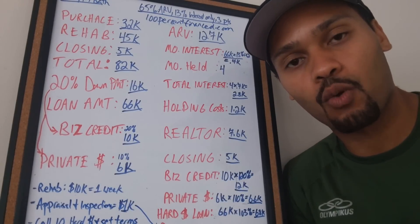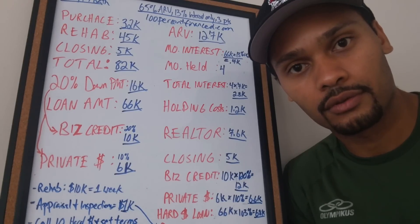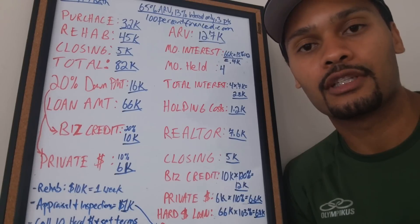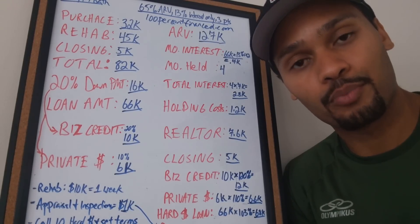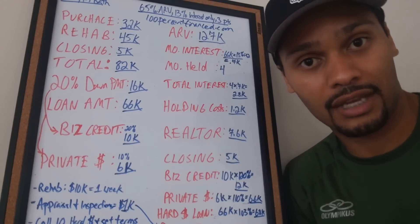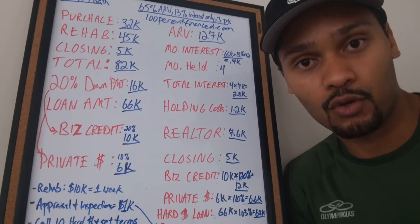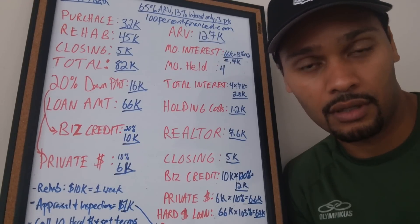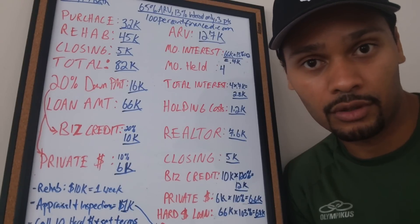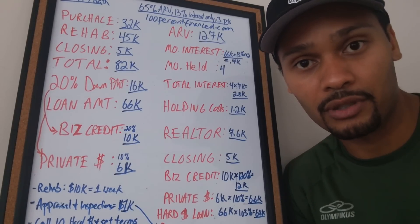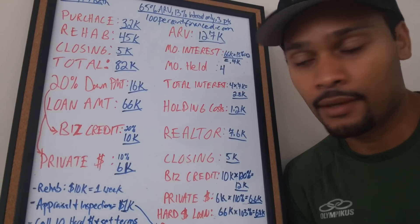If you don't happen to qualify for hard money, it's not the end of the world. You just need to be resourceful — find people who do qualify and partner with them. That's exactly what I'm doing with the flip I'm doing now. I partnered with a guy who qualifies for hard money; he found the deal, I had the capital. He brings the hard money, I bring the down payment — a perfect match.